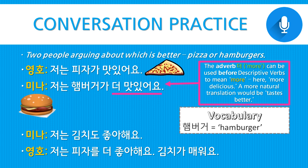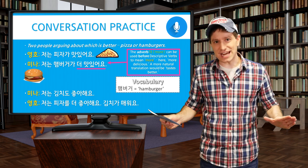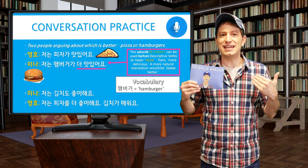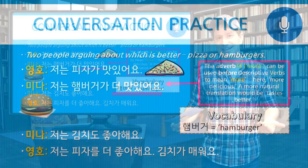Mina says: 저는 김치도 좋아해요 — 'I also like 김치.' To which 영호 replies: 저는 피자를 더 좋아해요 — 'I like pizza more.' 김치가 매워요 — '김치 is spicy.' By saying 김치가 매워요, he's not changing the topic of the conversation, which is still 저는. So the topic is me — as for me, 김치 is spicy. That's what he's saying here.